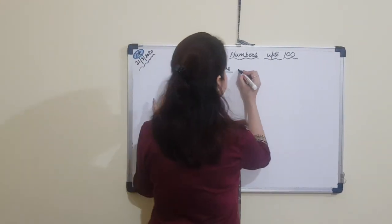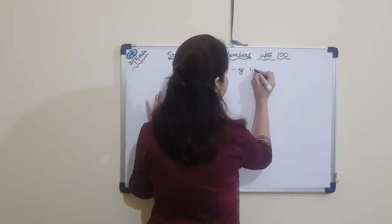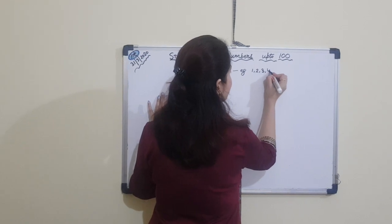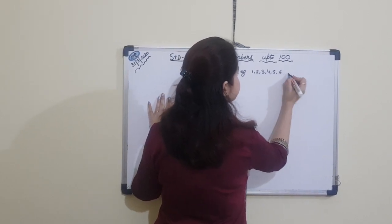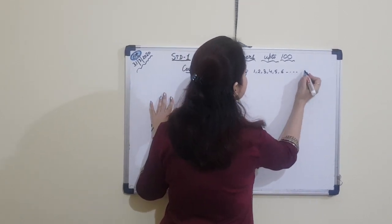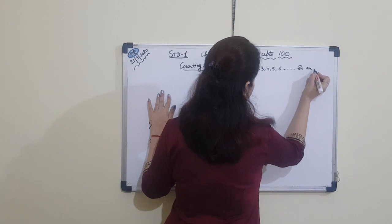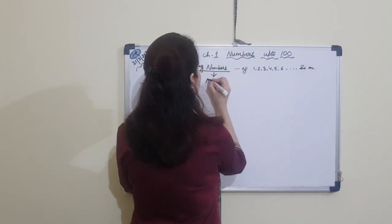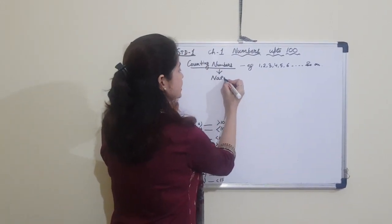For example, 1, 2, 3, 4, 5, 6 and so on. These numbers are also known as natural numbers.